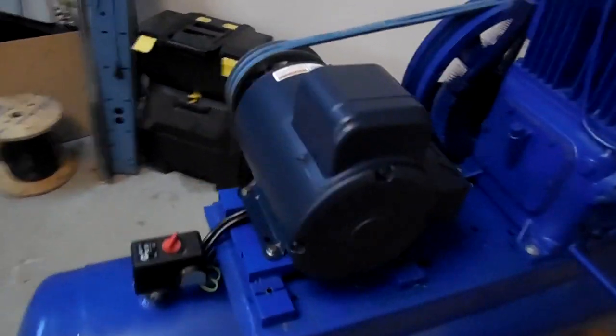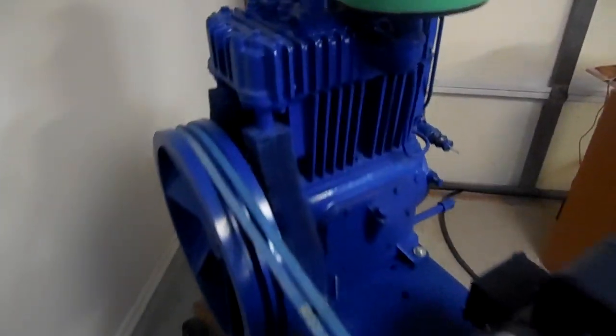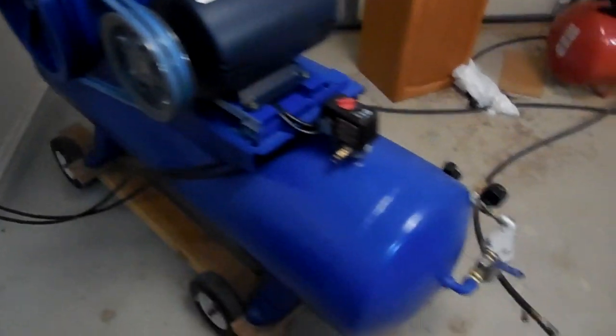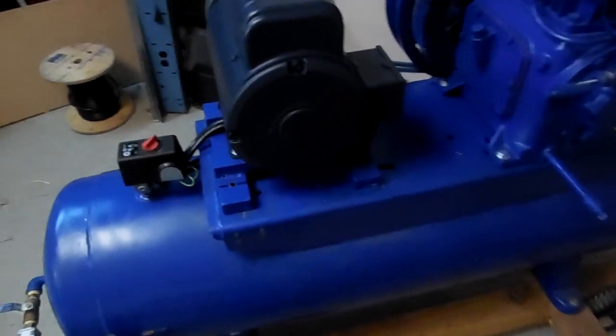I finally got an electric motor for my Quincy 325 air compressor. It's a ROC-10. It has nearly been an entire year since I pulled this back and now I finally have an electric motor for it and it's bolted down on the tank and basically everything is set up.